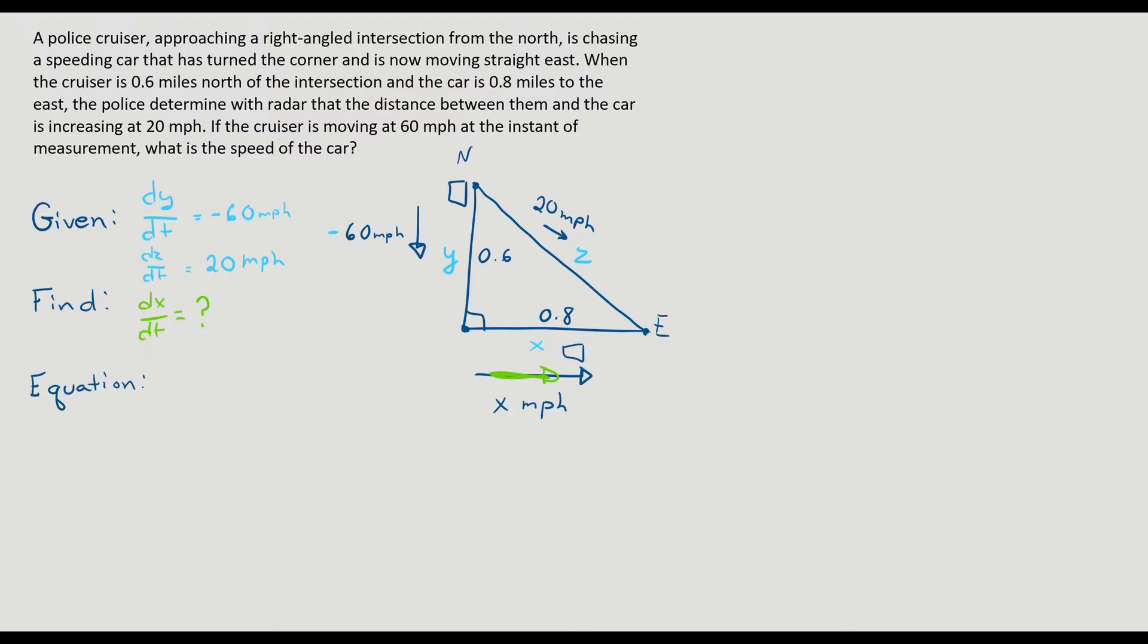But when are we trying to find it? When y is equal to 0.6 and x is equal to 0.8, because you kind of see the problem freezes us at that moment, when the car is 0.6 from the intersection and the speeding car is 0.8 away. You can see dx/dt is changing. These cars are moving at different rates. So dx/dt is going to be one value, maybe when it's 0.5 miles from the intersection, but it's going to be a different value when it's one mile from the intersection. So we need to freeze time at the instance when our police is 0.6 from the intersection and our speeding car is 0.8. That's when we want to know dx/dt.